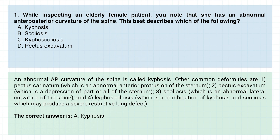An abnormal AP curvature of the spine is called kyphosis. Other common deformities are: 1. Pectus carinatum, which is an abnormal anterior protrusion of the sternum. 2. Pectus excavatum, which is a depression of part or all of the sternum. 3. Scoliosis, which is an abnormal lateral curvature of the spine. And 4. Kyphoscoliosis, which is a combination of kyphosis and scoliosis, which may produce a severe restrictive lung defect.